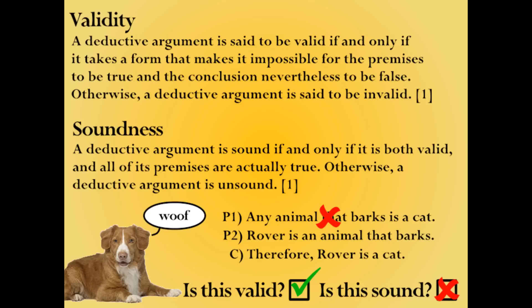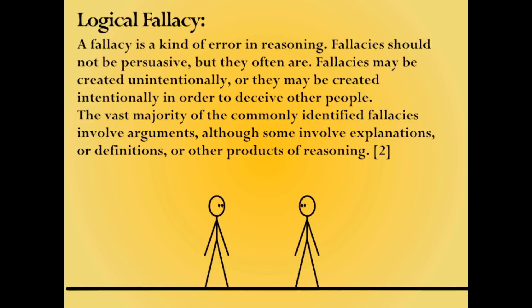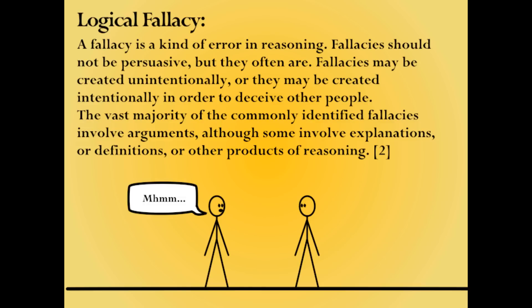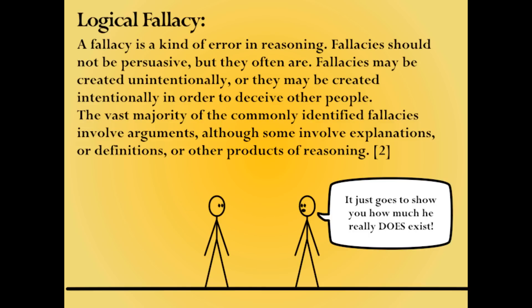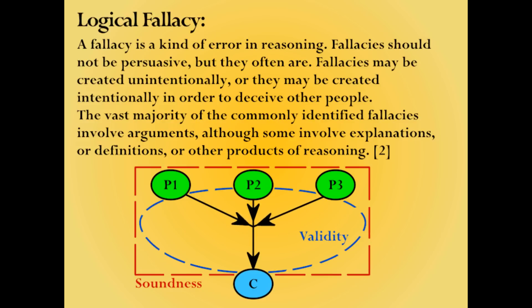Now that these aspects of a logical argument are a little more clear, we can take a look at what a logical fallacy is. Roughly speaking, a fallacy is a kind of error in reasoning. Fallacies should not be persuasive, but they often are. Fallacies may be created unintentionally, or they may be created intentionally in order to deceive other people. The vast majority of commonly identified fallacies involve arguments, although some involve explanations, definitions, or other products of reasoning. In essence, a logical fallacy indicates that the logical reasoning within an argument is invalid.